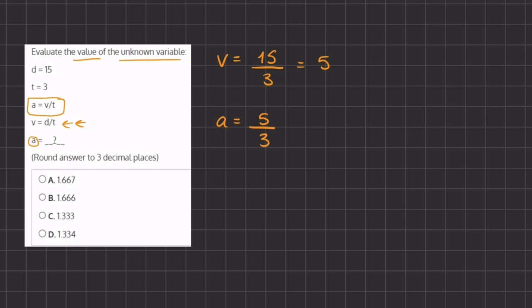Now the answer for a is going to be 5 divided by 3, but all of our answers are written in decimal form. So we are going to ask ourselves how many times does 3 go into 5, and that is once and we have 2 left over out of 3.